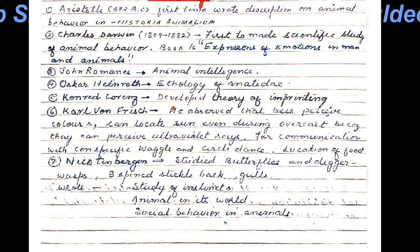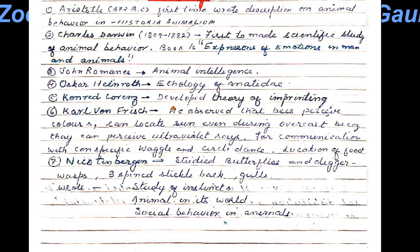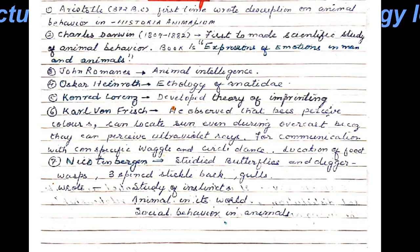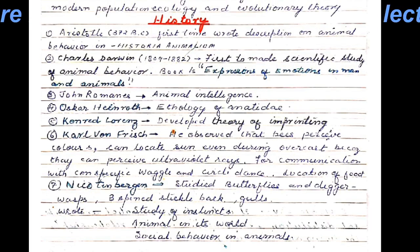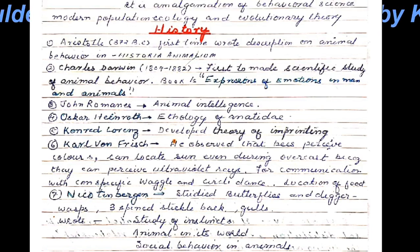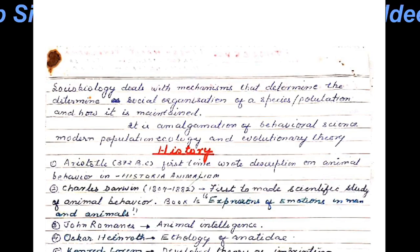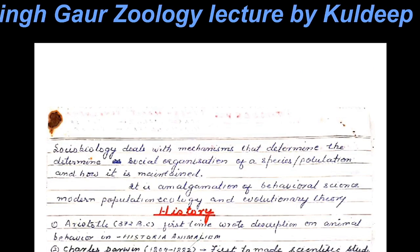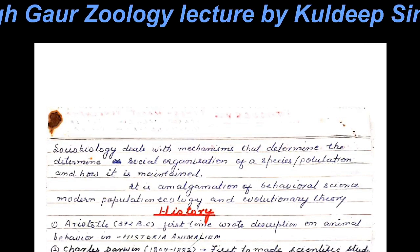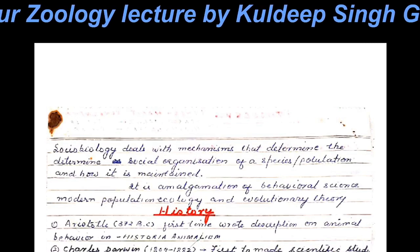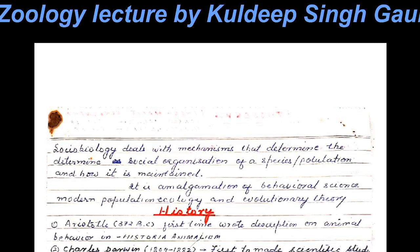Nicotin Bergen studied deer flies, digger wasps, three-spined sticklebacks, and gulls. So this was the background of this comparatively newer discipline — ethology, or the study of animal behavior.